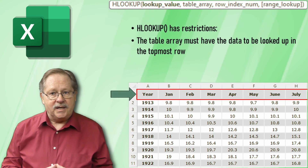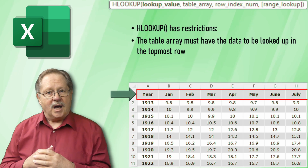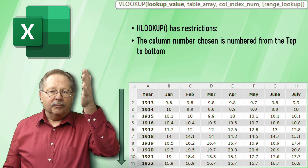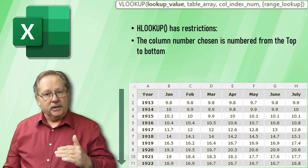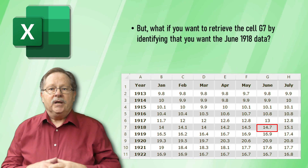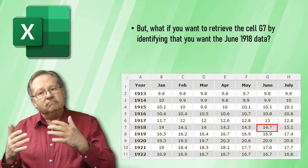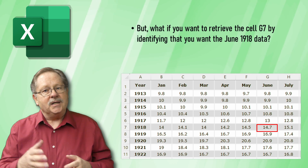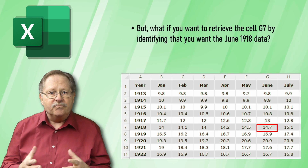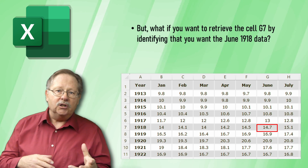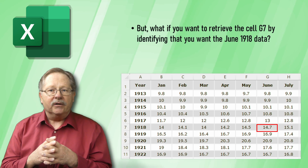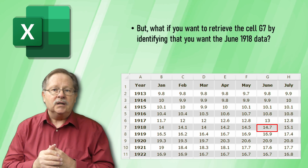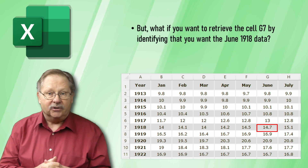It has the same restrictions. The lookup row has to be at the top, and your table array is numbered from that top row on down. But what if you want to look up column G7 and identify it as June 1918 data? That's a challenge. With VLOOKUP and HLOOKUP mashed together trying to determine what column and what row you're in and get it to actually work, that becomes pretty difficult.